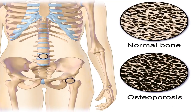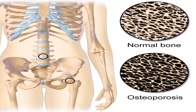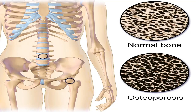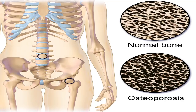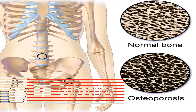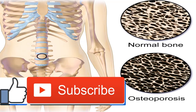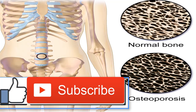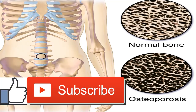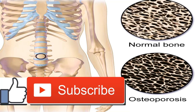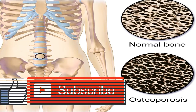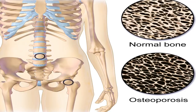Osteoporosis complications overview highlights. Osteoporosis is a disease in which bone breaks down faster than it can be restored. This causes bones to be less dense and more susceptible to fractures and breaks. There are no clear signs of osteoporosis until you break or fracture a bone unexpectedly.